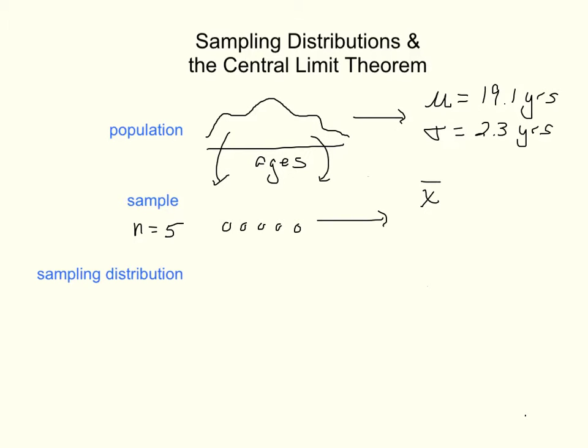typically denoted as x-bar, and let's suppose these folks are a little bit older than the population's average. So suppose that the sample mean here was about 20.4 years. And they will have a standard deviation, and let's suppose that standard deviation is about three years.